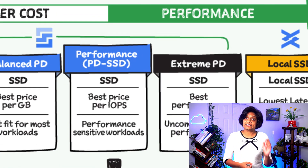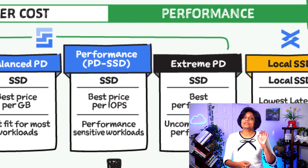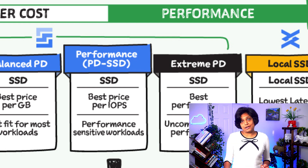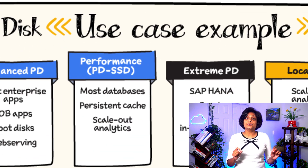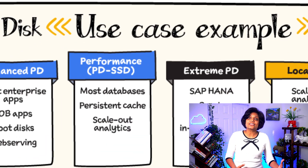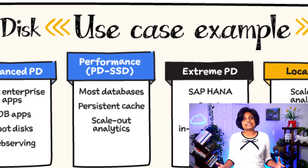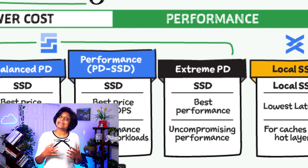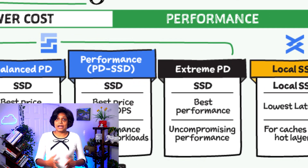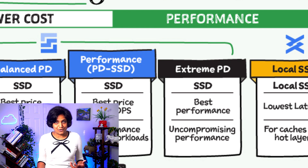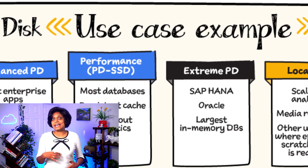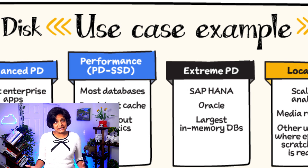Performance PD is SSD and provides the best price per IOPS, or input-output operations per second. It is best suited for performance-sensitive applications such as databases, caches, and scale-out analytics. Extreme PD is SSD optimized for applications with uncompromising performance requirements, such as SAP HANA, Oracle, and the largest in-memory databases.